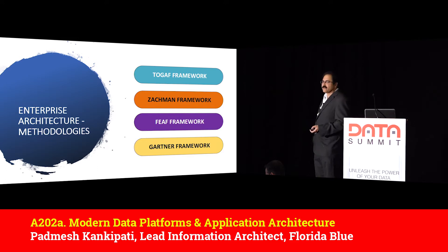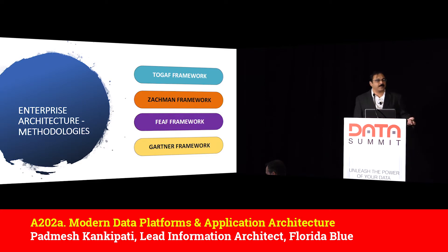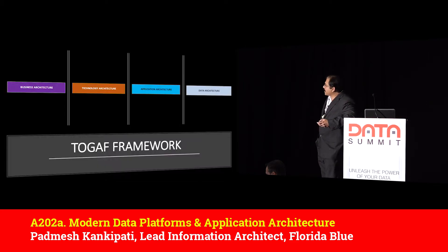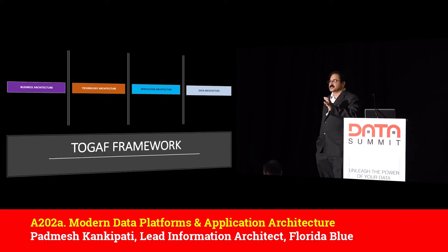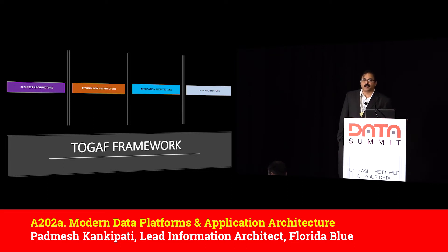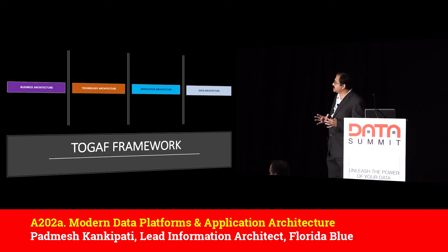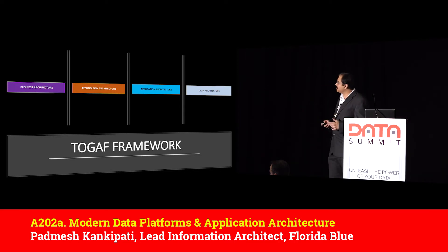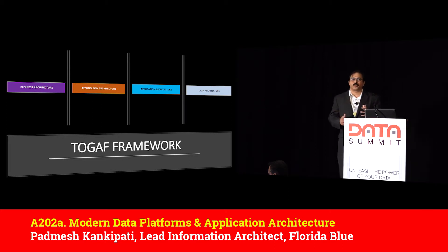TOGAF is the most widely adopted — around 80% of large enterprises have some form of TOGAF implementation. The TOGAF framework looks at architecture foundations as business, technology, application, and data architecture. Business architecture is a blueprint for how organizations understand challenges and align goals. Application architecture covers how we build applications, how they behave, interact with each other, and with users. Technology architecture covers the hardware and software infrastructure. Data architecture covers everything related to data: how we consume, store, utilize, and process it.